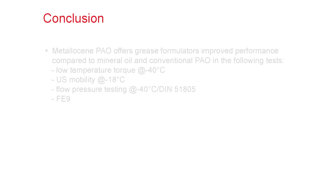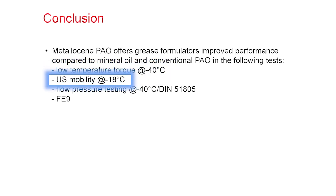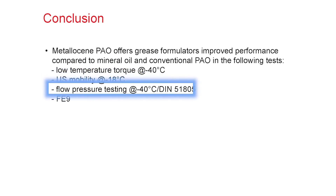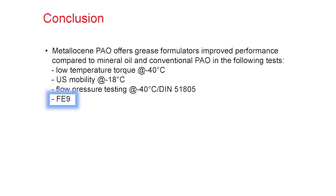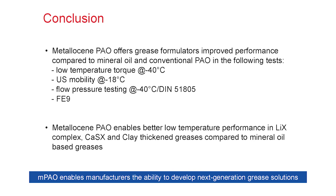To summarize, high-viscosity metallocene PAO offers grease formulators improved performance compared to mineral oil and high-viscosity conventional PAO in the following tests: low-temperature torque at minus 40 degrees C, U.S. Steel mobility at minus 18 degrees C, and flow pressure at minus 40 degrees C. In oxidation conditions and high temperature in the FE9, you ought to see benefits using MPAO. It enables you to produce better low-temperature performance in lithium complex, calcium sulfonate, and clay thickener greases compared to mineral oil-based greases.